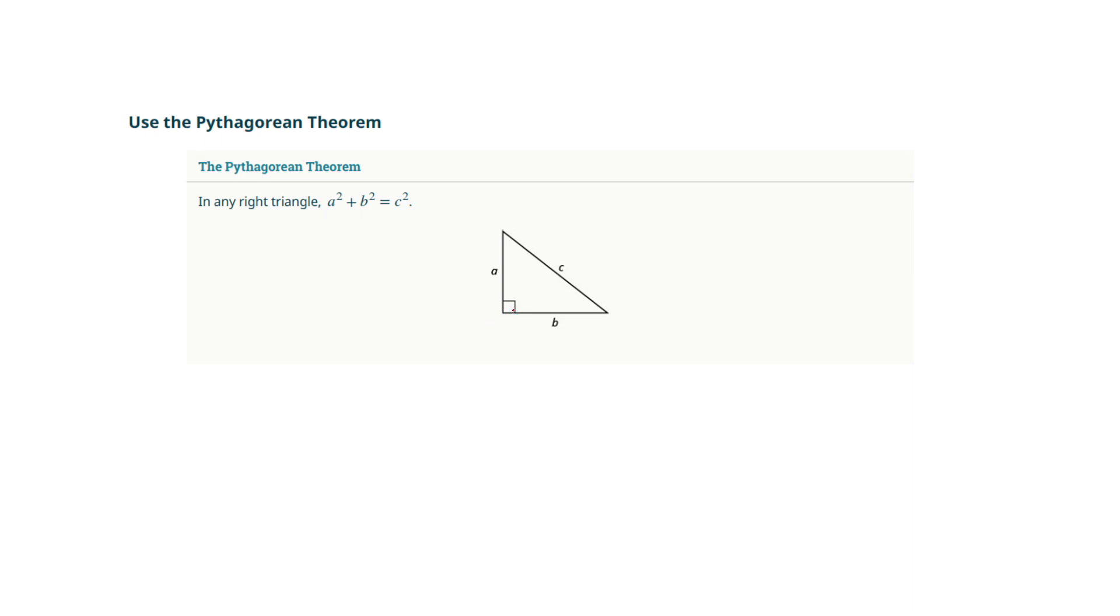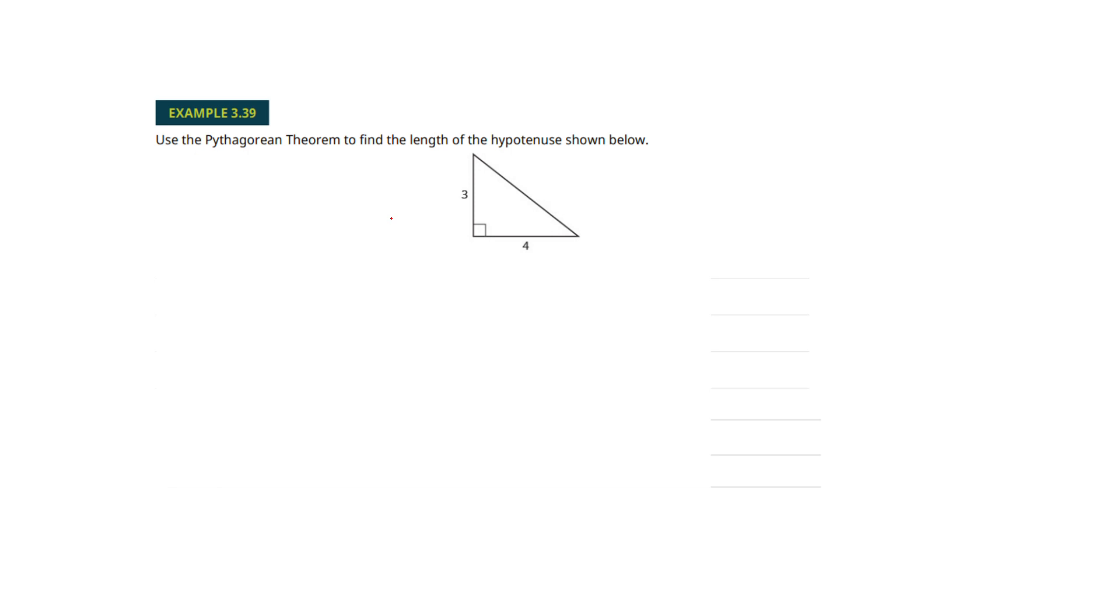And it says that if you have a right triangle, it turns out that you can square each of the individual sides around the right triangle. So here's the right angle, the 90 degree angle. If you square each of those and add them up, it always equals the hypotenuse, the third side being squared. So I probably didn't say that super well, but let's show it here.